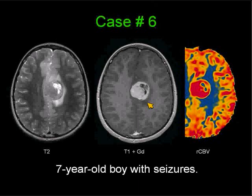Another pediatric case: a 7-year-old boy with seizures. You are shown an axial T2-weighted image on the left, on the center a post-Gadolinium image, and on the far right a cerebral blood volume study from the MRI perfusion study.